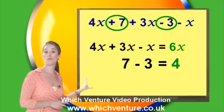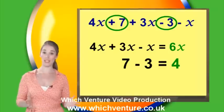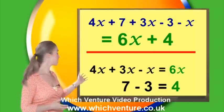Notice how the term or number in the expression takes the sign which is in front of it. So overall the simplified expression is 6x plus 4.